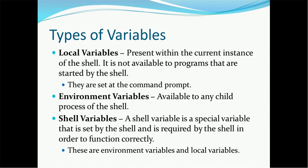Types of variables — basically there are three types: local variables, environment variables, and shell variables. Local variables are present within the current instance of the shell and are not available to programs started by the shell — they are set at the command prompt. Environment variables are available to any child process of the shell. Shell variables are special variables set by the shell and required by the shell to function correctly — these include both environment and local variables.